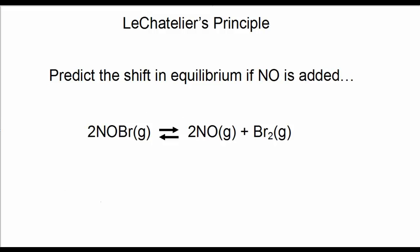Now predict what would happen if we add NO to this reaction system. NO is a product, so your prediction would be a shift to the left. The system would temporarily shift to the left to account for the additional NO.